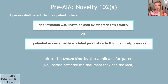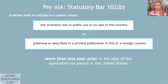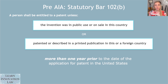The pre-AIA version of the statute also has a statutory bar under Section 102b. Something can also be prior art if the invention was in public use or on sale in this country, or patented or described in a printed publication anywhere, more than a year prior to the date of filing the application for the patent. This is pretty similar to the grace period in the post-AIA world, but here it's like an alternative to the first-to-invent system — saying that even if you were first to invent, you're not entitled to a patent if you started disclosing it in printed publications more than a year before you filed.